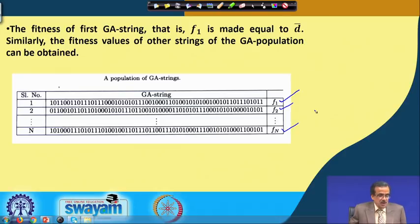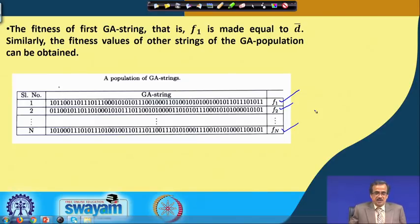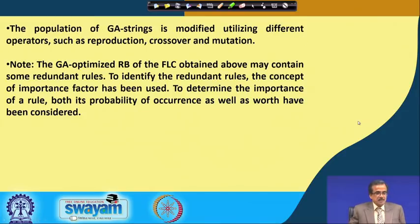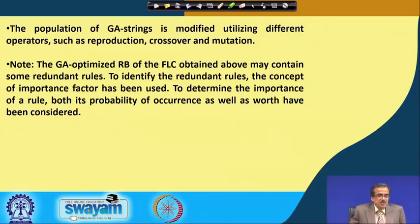Once we have the optimal database and rule base, this optimal fuzzy logic controller can be used for online applications — we can pass test scenarios and find the output for any set of inputs. If we optimize or evolve the knowledge base — particularly the rule base — by following this method, there is a possibility that there will be some redundant rules in the rule base.